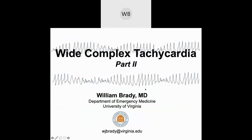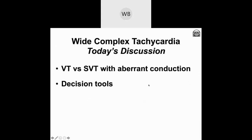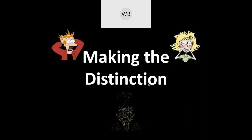Today's lecture is part two of a three-part series. If you have not seen part one, you can certainly access it through the course description or search it on your own. There will be a part three as well. In part two, we're going to talk about making the distinction between VT versus SVT with aberrant conduction, and talk very briefly about some of the preexisting clinical decision rules.